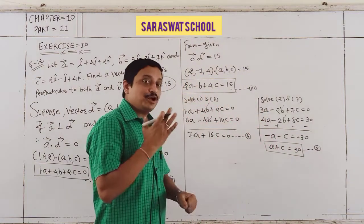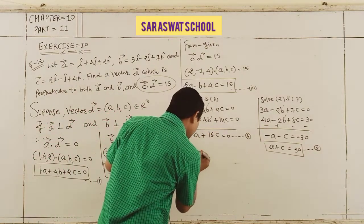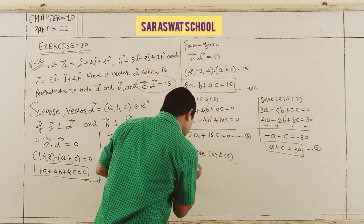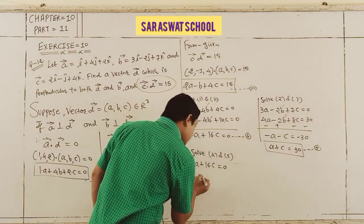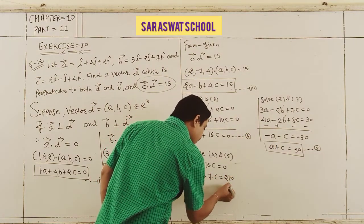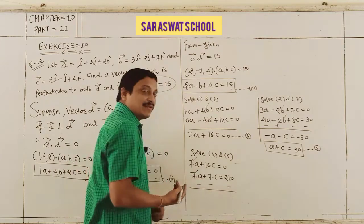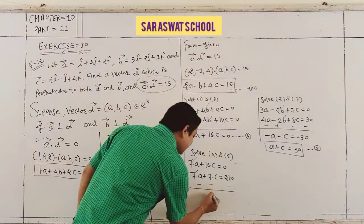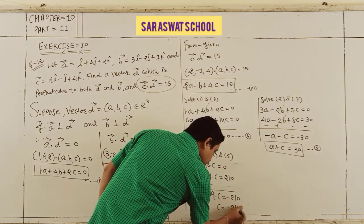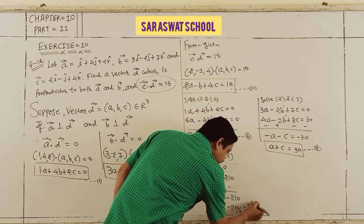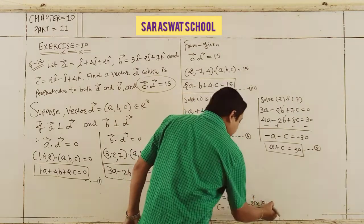Now using equations 4 and 5 — multiply equation 5 by 7: 7a + 7c = 210. Equation 4 gives 7a + 16c = 0. Subtracting: −9c = 210, so c = −210/9 = −70/3.